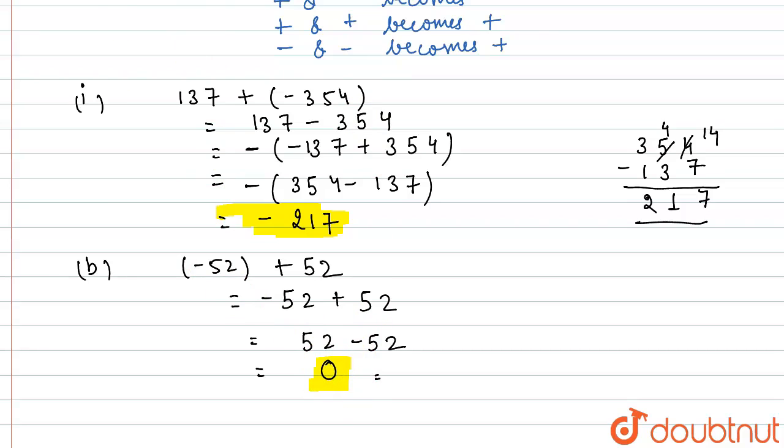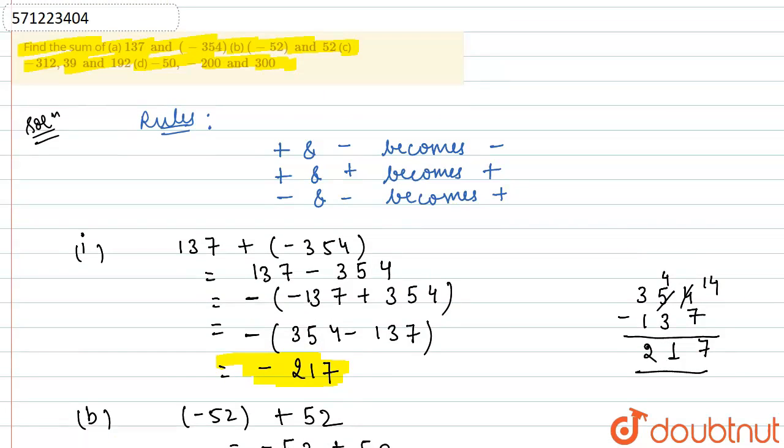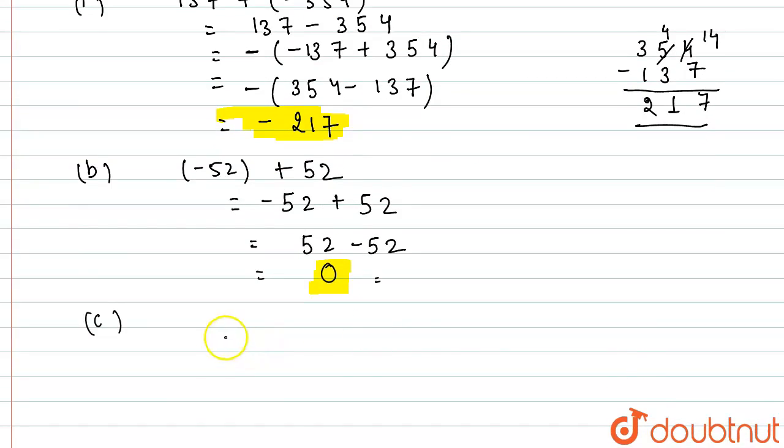Now part C: minus 312, 39, and 192. So we need to find the sum of minus 312 plus 39 plus 192. And one more thing from this B part: always remember that whenever we are having two same numbers and one is of plus sign and another is of minus sign, we always get the answer as zero. Now we'll come back to the C part. So what I'll do is I'll write this as minus 312 plus, and I'll write these both in bracket, that is 39 plus 192. So firstly what I'll do is I'll solve this.